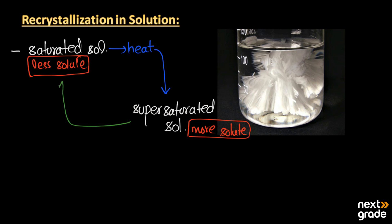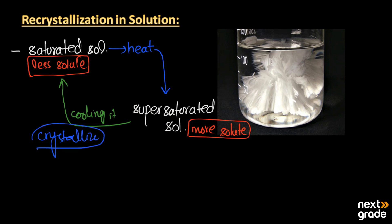When we decrease the temperature of the super saturated solution, or by cooling it, the more solute that is dissolved in the super saturated solution starts to crystallize out. At that point we call it recrystallization in the solution, or recrystallization in the super saturated solution.